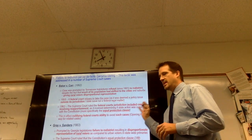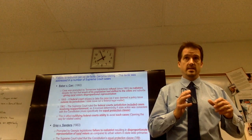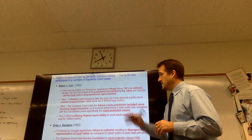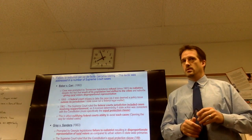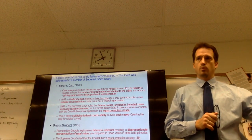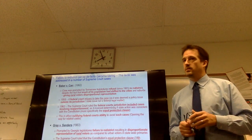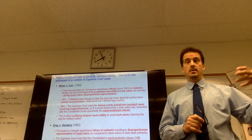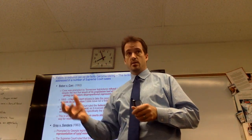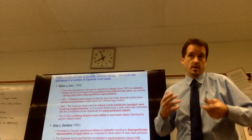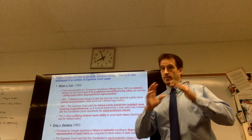What you see in both Baker v. Carr and Gray v. Sanders is a population shift with a failure to redistrict. One case is in Tennessee, one in Georgia. There's increasing urbanization — a decline in rural population and an increase in urban population — but no corresponding redistricting. That means people in rural areas are being overrepresented and people in cities are being underrepresented.